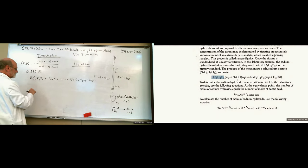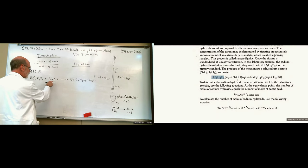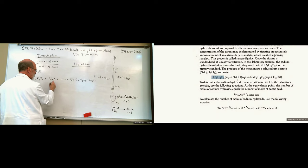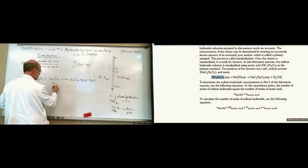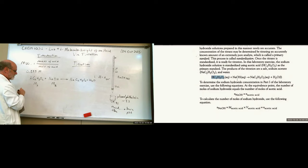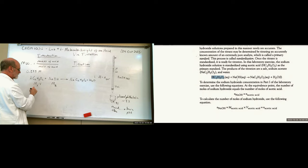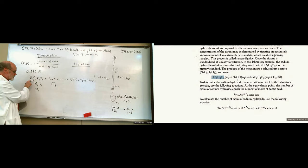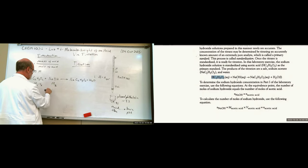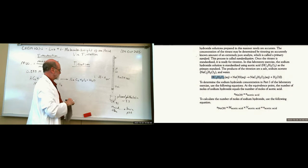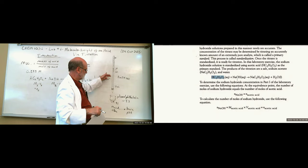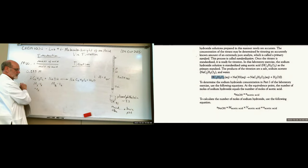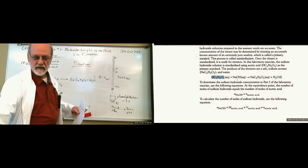So if we know the number of moles — since they're both in solution — we have the molarity of the base and the molarity of the acid. We know the molarity of the acid, so if we multiply that times the volume delivered, that equals the number of moles of acid delivered, or moles of hydrogen delivered. We don't know the molarity of the base, but we do know the volume of the base because we delivered a certain amount to a known volume of acetic acid.